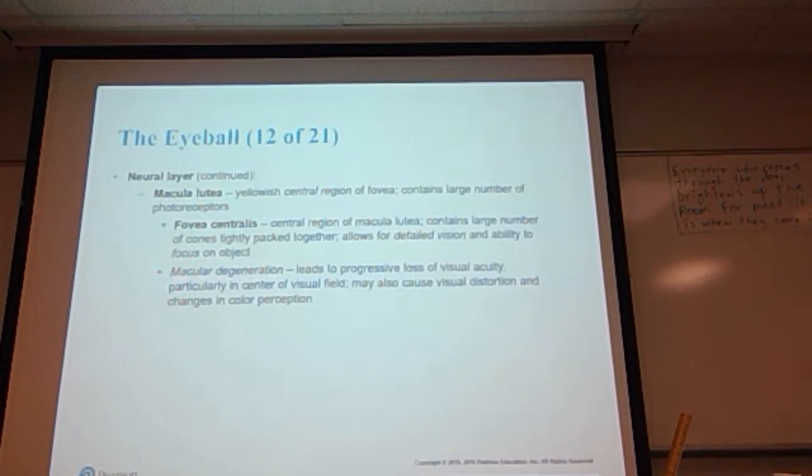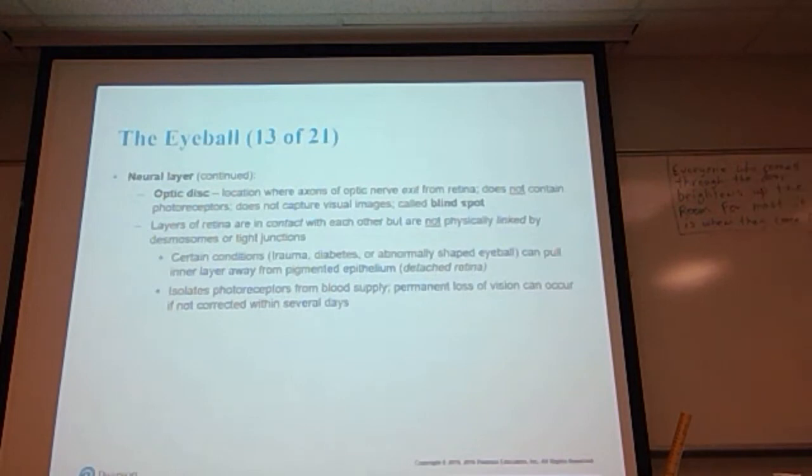The optic disc is located where the axons of the optic nerve exit from the retina. It does not contain any photoreceptors, does not capture visual images, and is referred to as your blind spot. Layers of the retina are in contact with each other but are not physically linked by desmosomes or tight junctions. Therefore, certain conditions like trauma, diabetes, or an abnormally shaped eyeball can pull the inner layer away from the pigmented layer in a condition known as a detached retina. This isolates the photoreceptors from the blood supply, and permanent loss of vision can occur if a detached retina is not corrected within several days.